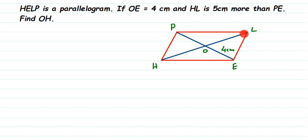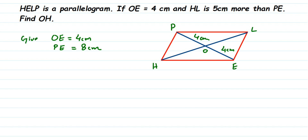From the question, OE = 4 centimeters. Since the diagonal bisects, PO is also 4 centimeters. So the whole diagonal PE = PO + OE = 4 + 4 = 8 centimeters.